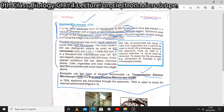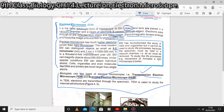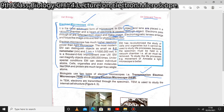To summarize what we studied: the electron microscope is the most advanced form of microscope. In the electron microscope, the object and lenses are placed in a vacuum chamber, and a beam of electrons is passed through.